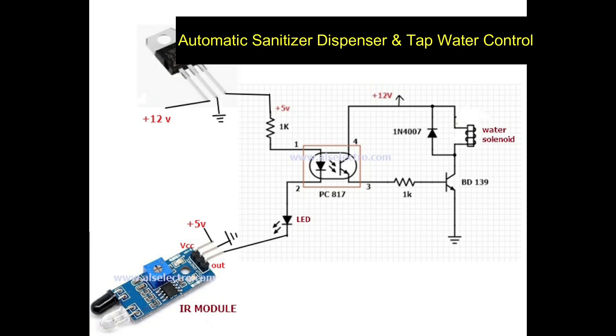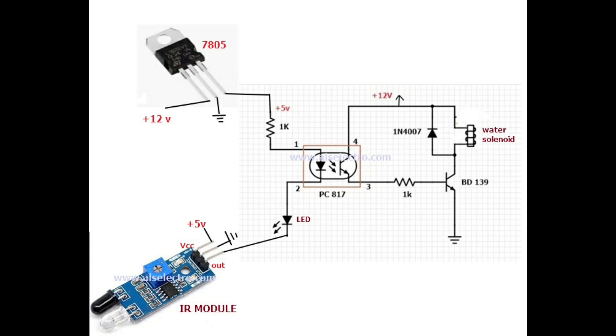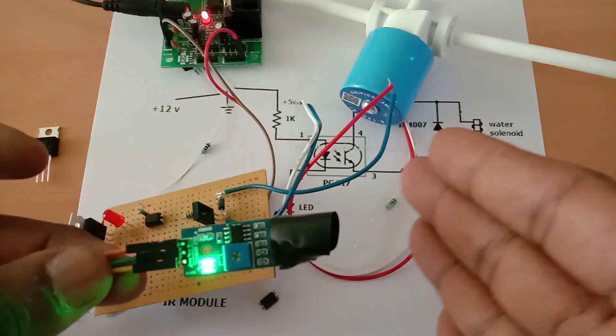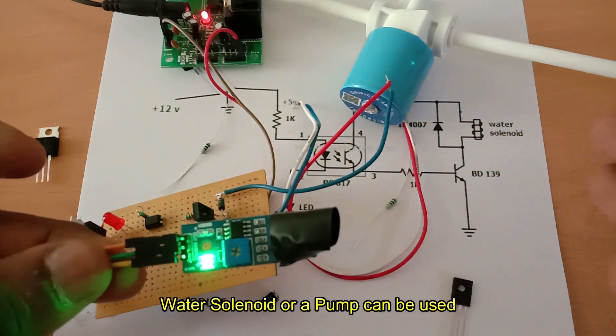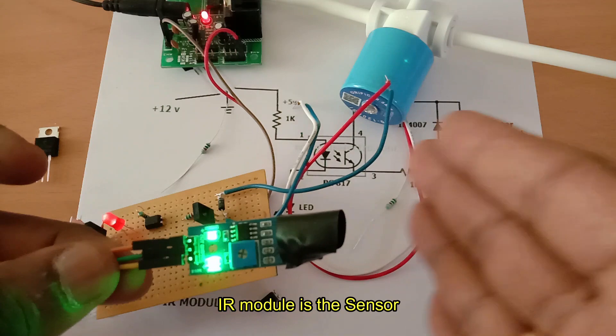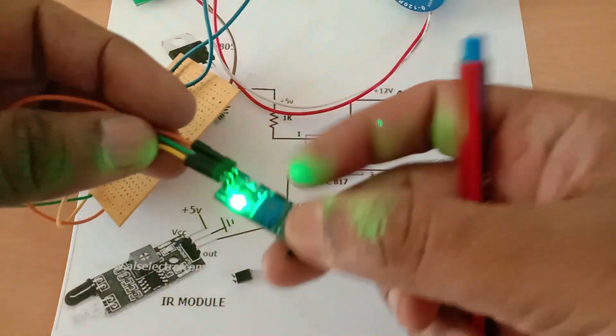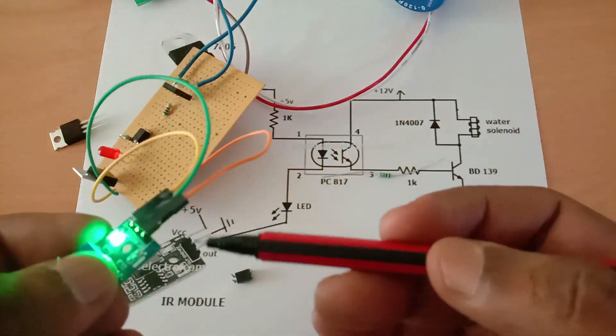Hello all, this video is on a simple circuit for automatic sanitizer dispenser or tap water control, which is very much needed in this virus spread season. The circuit is built on an IR module which gives a low output when an object is detected. This IR module works on 5 volts, so we use a 7805 regulator.